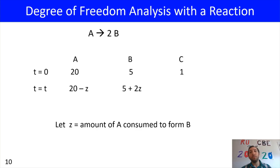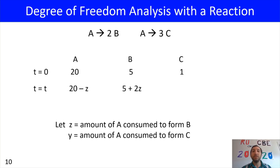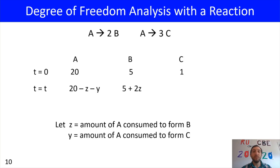Now we add the second reaction, A→3C. We define Y as the amount of A consumed to form C. At time T, A becomes (20−Z−Y) because A is consumed by both reactions. The B expression (5+2Z) is unaffected by this second reaction. For C, since every mole of A used produces 3 moles of C, we get C = 1+3Y.